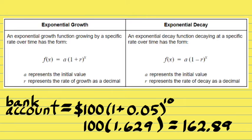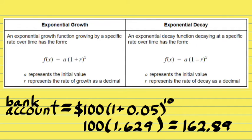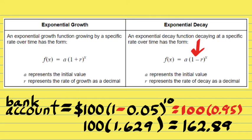Let's look at the flip side — an example showing exponential decay instead. The big difference is that you get a minus sign inside the parentheses instead of a plus sign, which is going to make the function decrease. Notice how instead of 1 plus 0.05, it now says 1 minus 0.05. When you do that subtraction, you get 0.95 inside the parentheses.